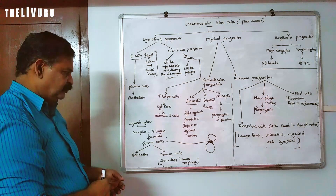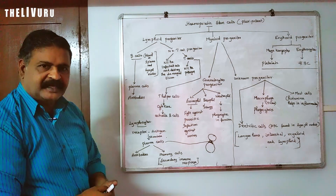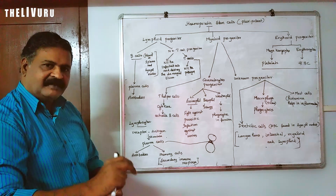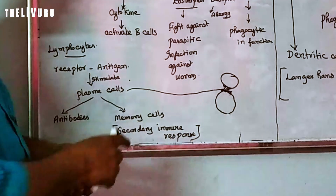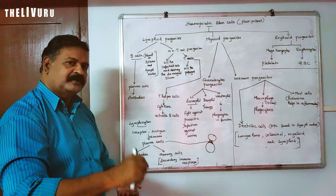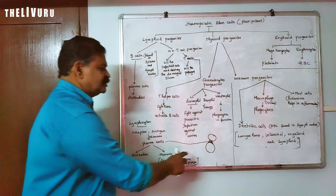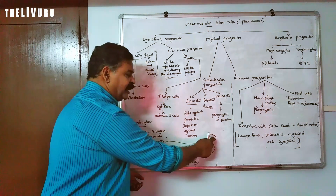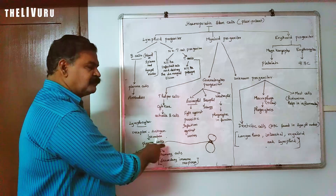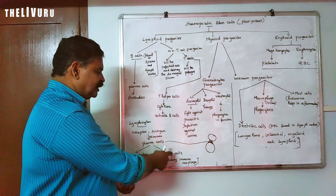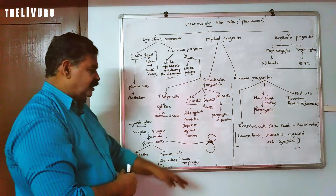The plasma cells are one type; another is called memory cells. B cells, when activated by an antigen, become plasma cells. One product is antibodies and another is memory cells. Antibodies are used to destroy pathogens and the memory cells are used for the secondary immune response.